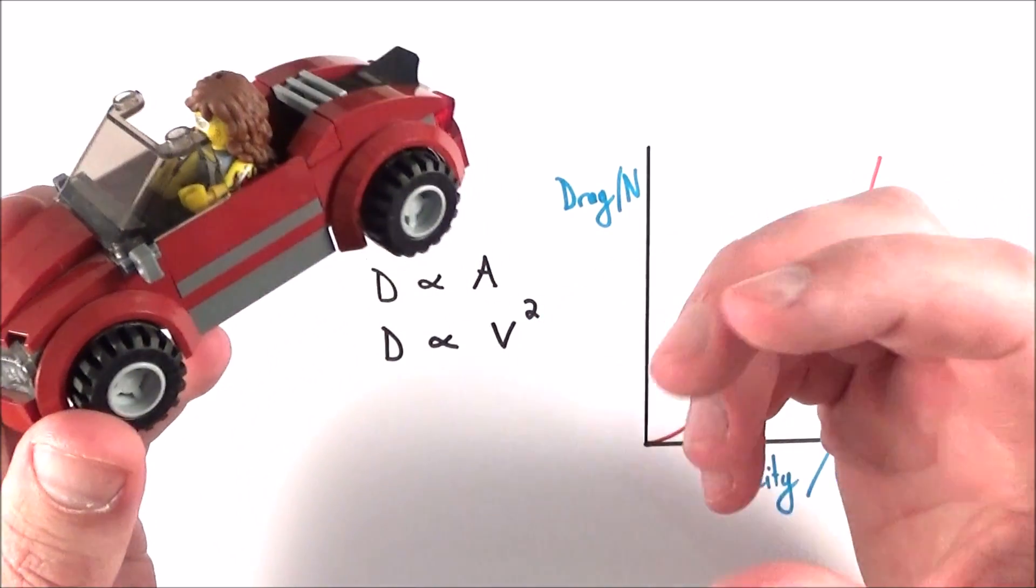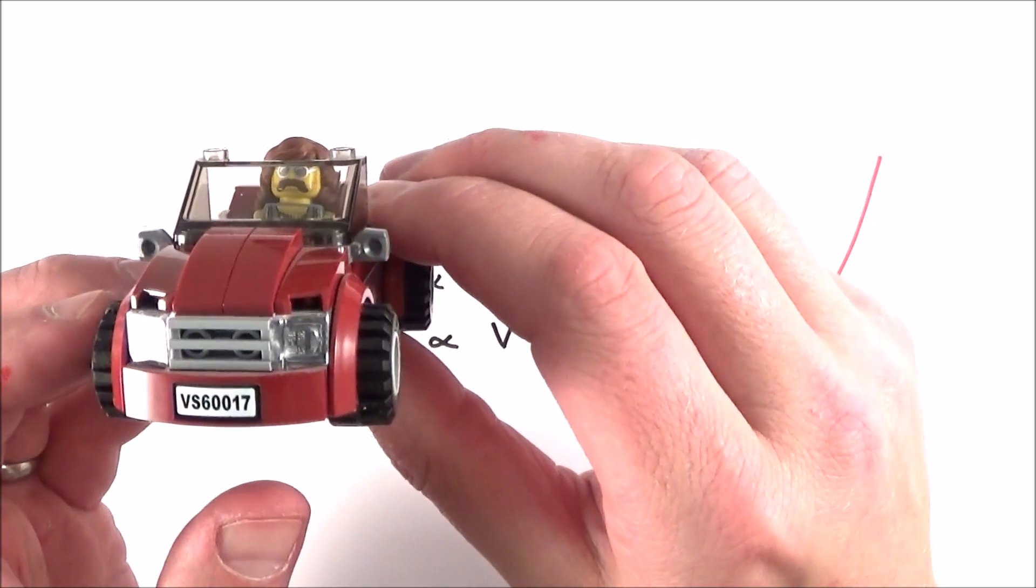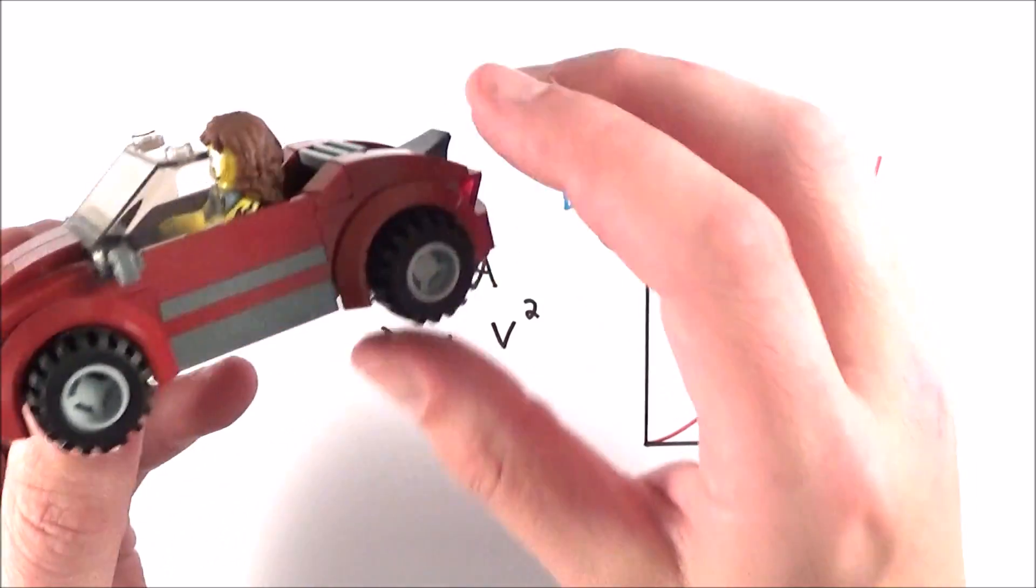The bigger the object, the bigger the drag force, and it is also proportional to the velocity of the object squared. So if you double the velocity of the object, the drag force goes up by a factor of four.